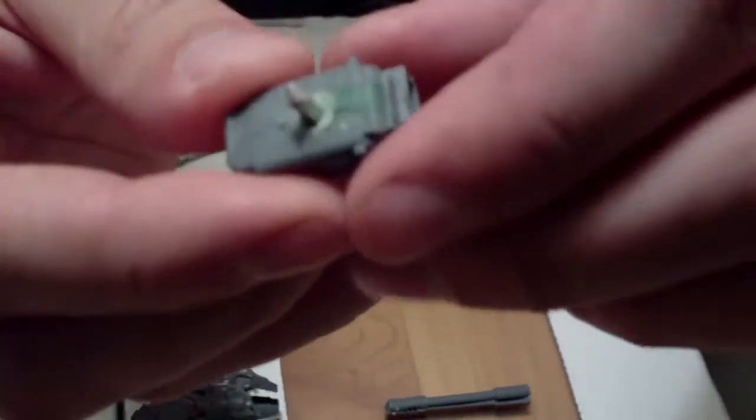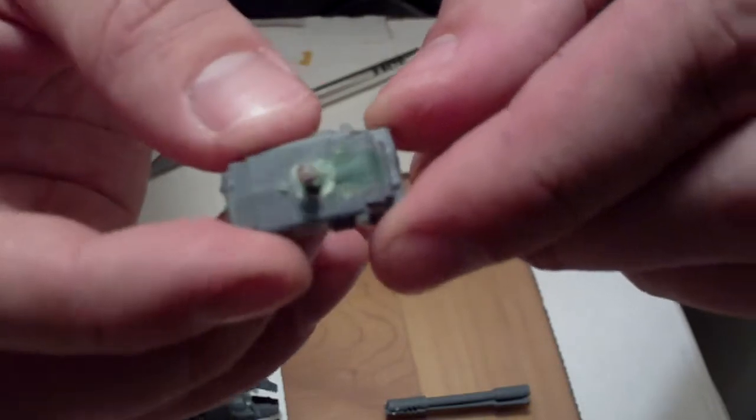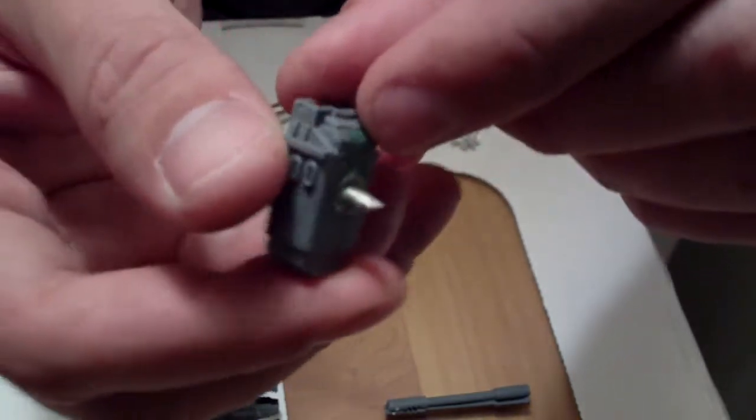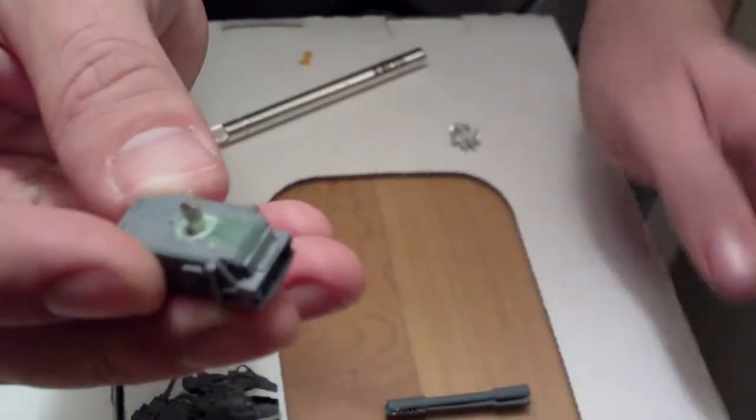Also, I went ahead and in the bottom there's this hole area, so I had to kind of cut around and get some of the plastic out and I shoved in this big piece of pewter. You can pin it with whatever you want and I filled in the rest of the gap with green stuff.